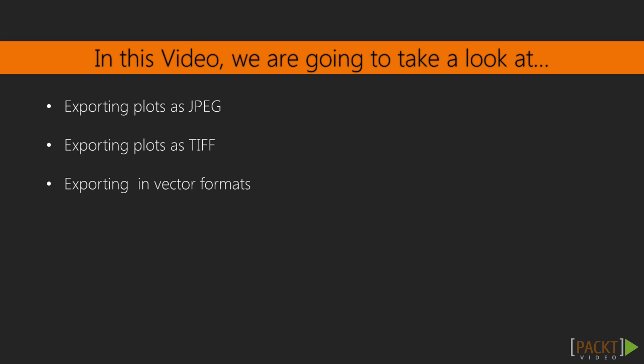In this video we will first look at ways to export in JPEG and TIFF formats with default options. Then we will look at ways to export in vector format, for example in PDF.